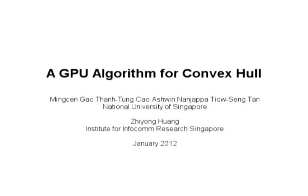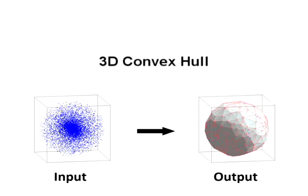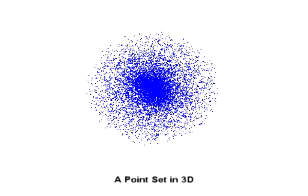This video describes a convex hull algorithm for the GPU. Given a set of points in 3D, we first enclose them in a large bounding box.